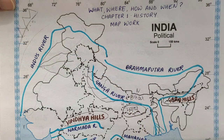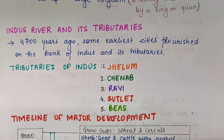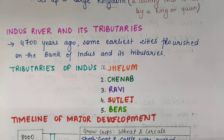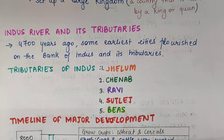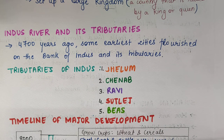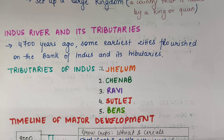We are going to focus on this area — this is the whole Indus River here. So, 4,700 years ago some of the earliest cities flourished on the bank of Indus and its tributaries. Joh sabse pehli cities thi na, wo Indus River ke paas develop hui thi. If someone asks you where the first cities flourished, you will say Indus River and its tributaries.